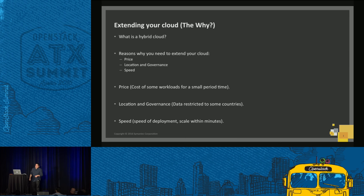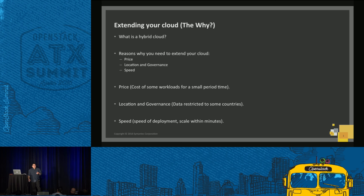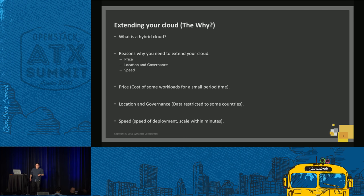So first of all, extending the cloud — why are you actually going to jump in there? What is hybrid cloud? There are a lot of different definitions. Some will say it's just having your cloud here and going to use AWS. Some others will say it's using something here and then using Box for storage services. Some others say hybrid cloud is multiple private clouds connected together. What we're going to focus on here is you run your private OpenStack and then you need to extend it outside into some other public provider.